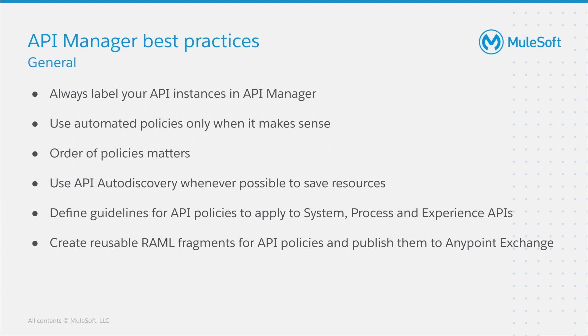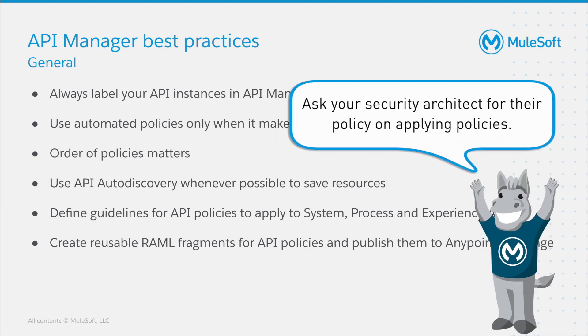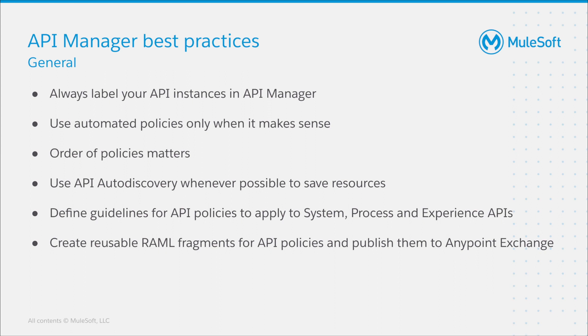Let's look into some general best practices when working with API Manager. First, always label your API instances in API Manager. This makes it easier to read from Anypoint Exchange which instances are available, because without labeling you will only see the instance ID. Be careful with automated policies — only use them where it really makes sense, as not every policy makes sense for every API. You can also set up the execution order of policies, so put your policies in a meaningful order, as executing a caching policy before a rate-limiting policy doesn't make much sense, for example. Another recommendation is to use API Autodiscovery whenever possible to save resources. If you're not familiar with API Autodiscovery, check out the link to the API Autodiscovery vs. API Proxies Friends of Max overview, linked below the video.